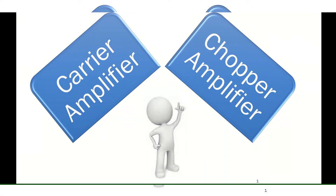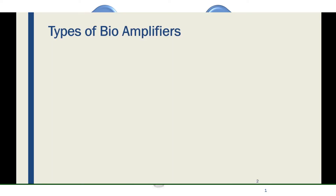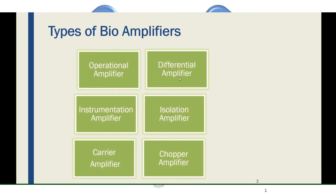Welcome to my channel Dazzling Stepping Stone. I am Bharata Sreeja. Today we are going to discuss about two topics: carrier amplifier and chopper amplifier. First, we should know what is a bio amplifier. Bio amplifiers are used for measuring physical quantities and mainly used for amplification. Sometimes the measured signal has very low amplitude and low frequency, so we use bio amplifiers to boost up the signal. We have already discussed operational amplifier, differential amplifier, instrumentation amplifier, and isolation amplifier.